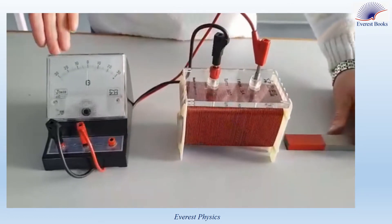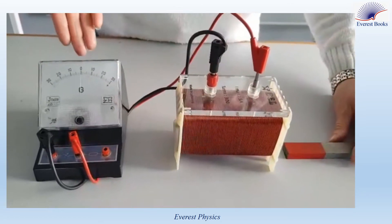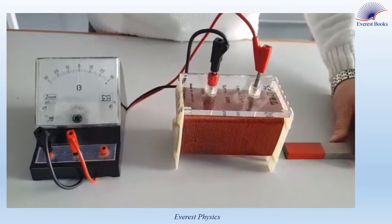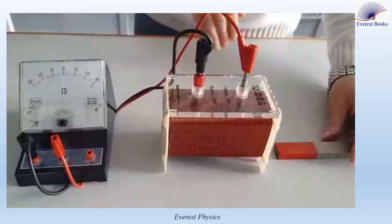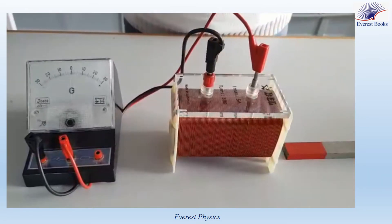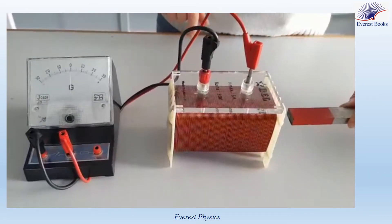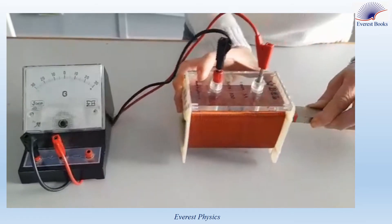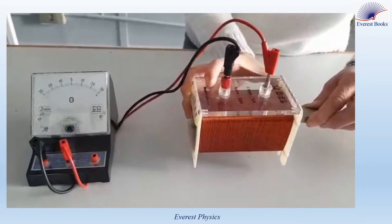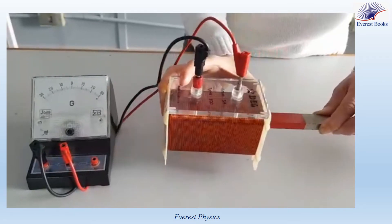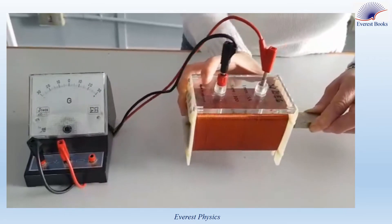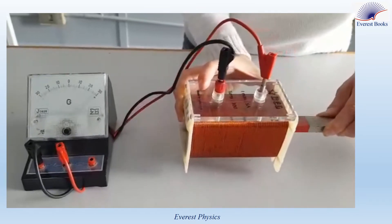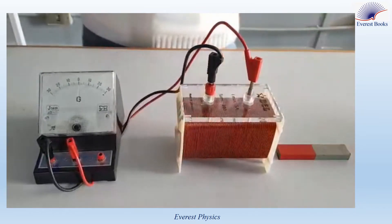What does this mean? This means that the circuit carries an electric current. Now, can we obtain the same result by keeping the magnet at rest and moving the coil? The magnet is at rest and the coil is moving towards and away from the magnet, and we get the same result.